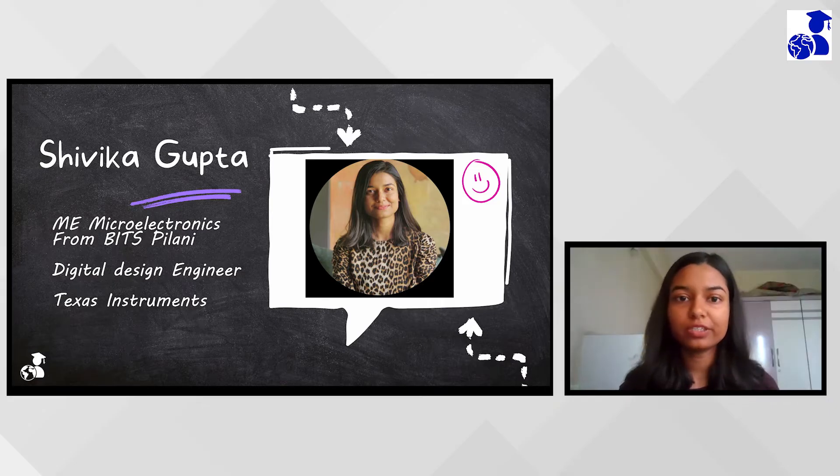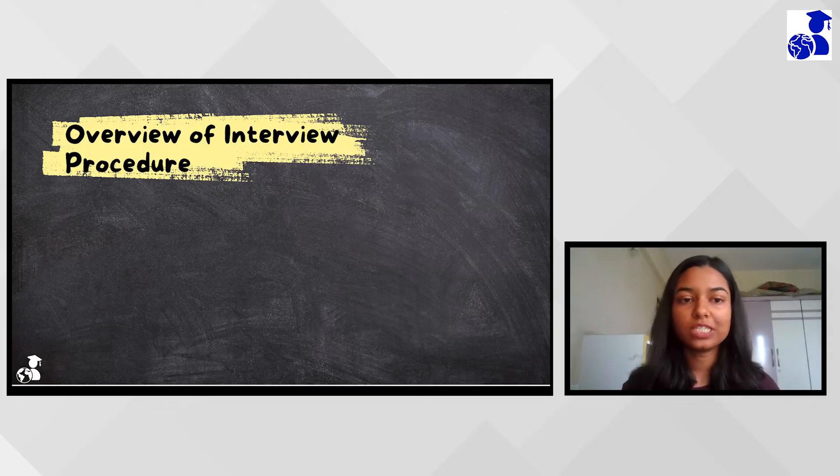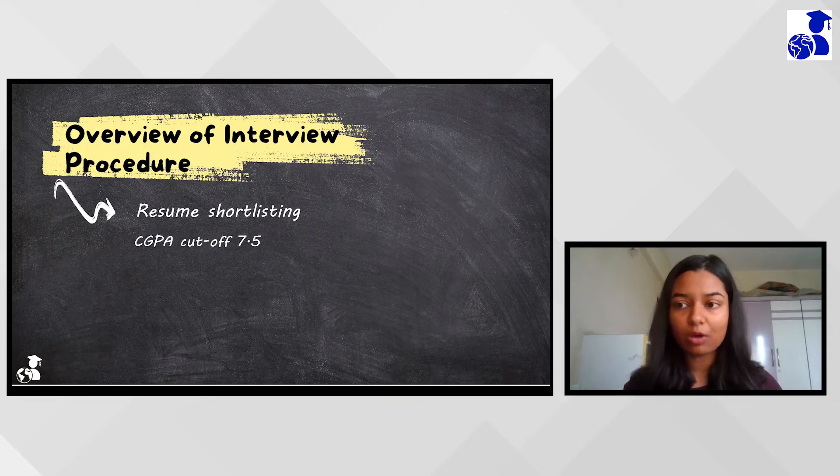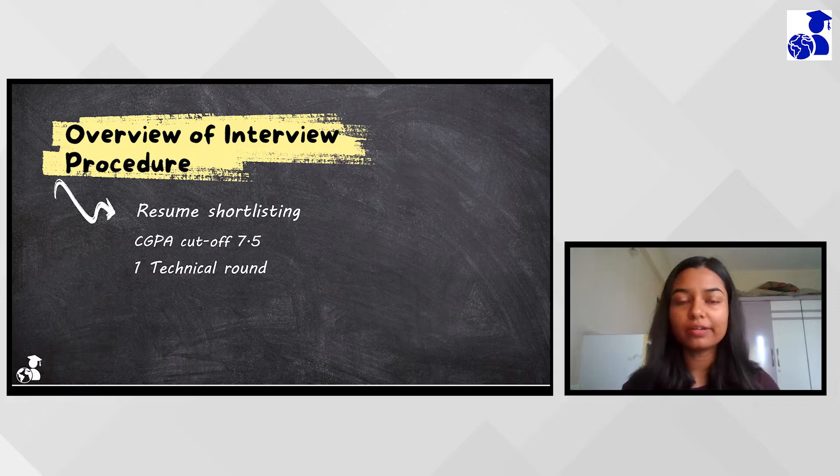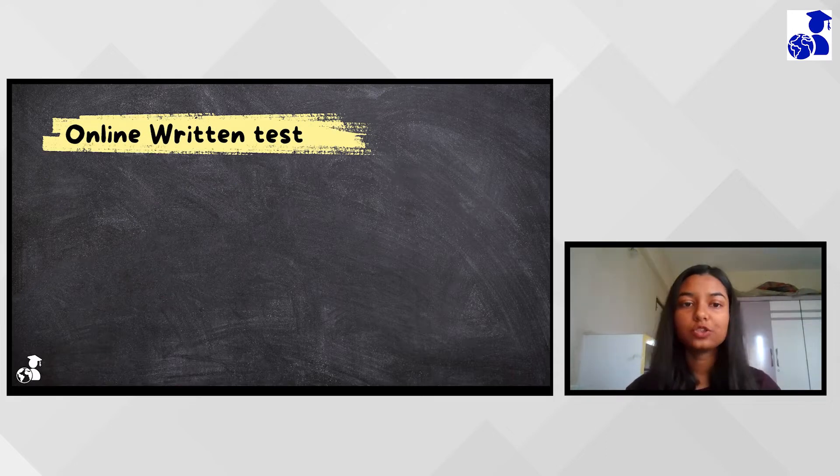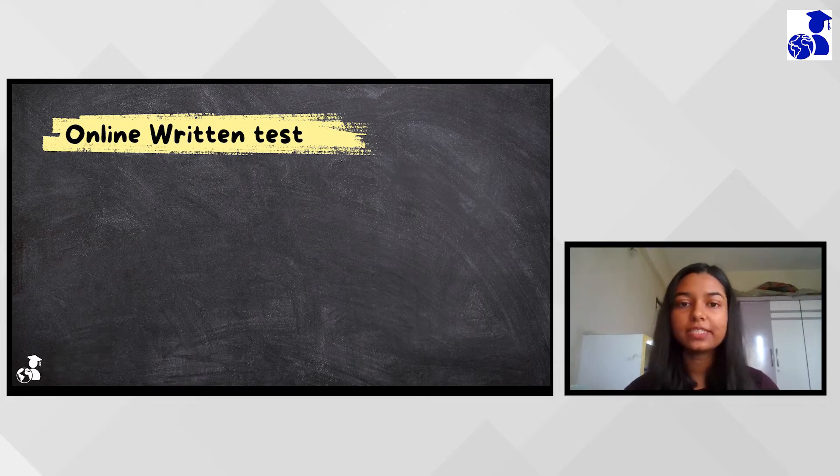TIA came for digital and analog profile with a CG cutoff of 7.5. There were three rounds: first was an online test, then one technical round, and one HR interview, which was actually more like an HR call.